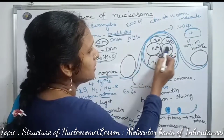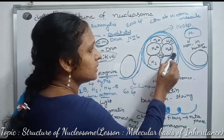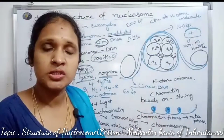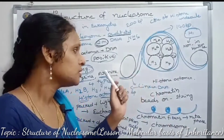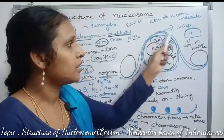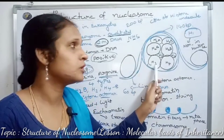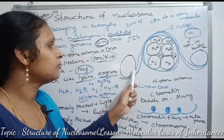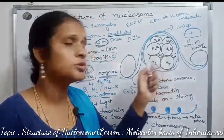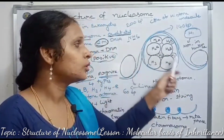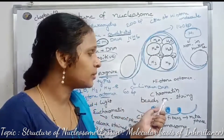The octamer consists of H2A, H2A, H2B, H2B, H3, H3, H4, H4 — totally 8 proteins forming the histone octamer. The negatively charged DNA wraps around the positively charged histone octamer. The octomers as nucleosome repeating units form chromatin, which is further supercoiled to form chromatin fibers.